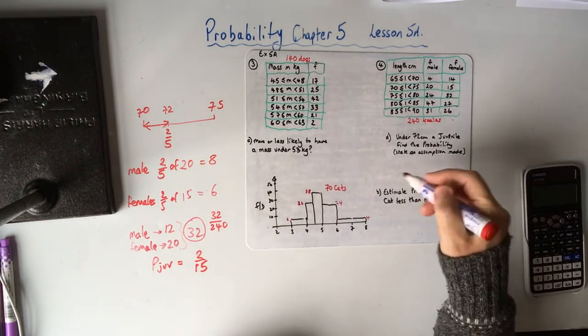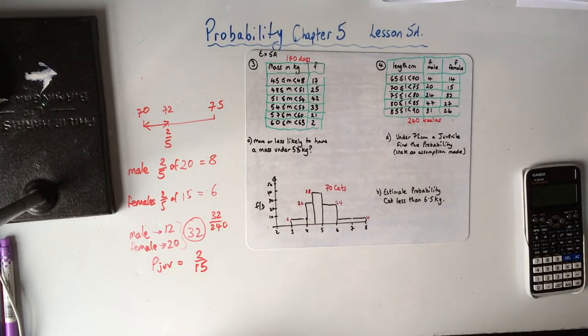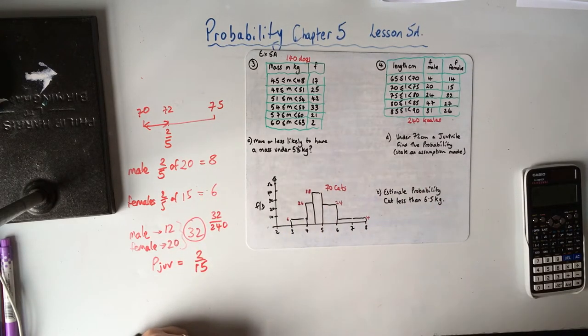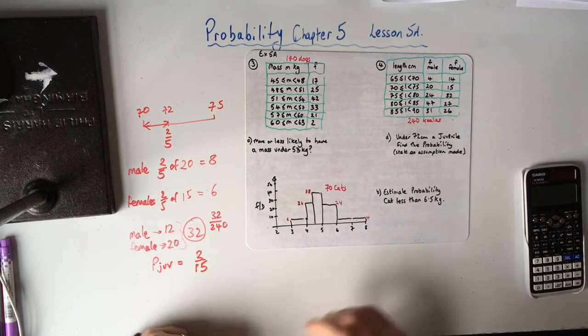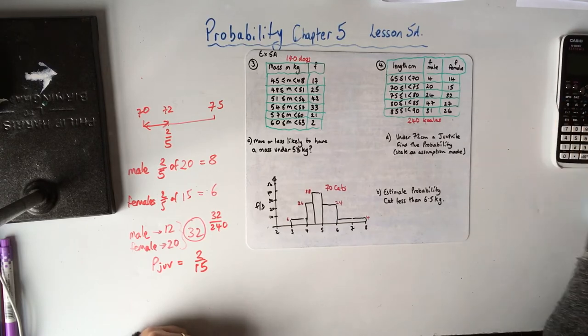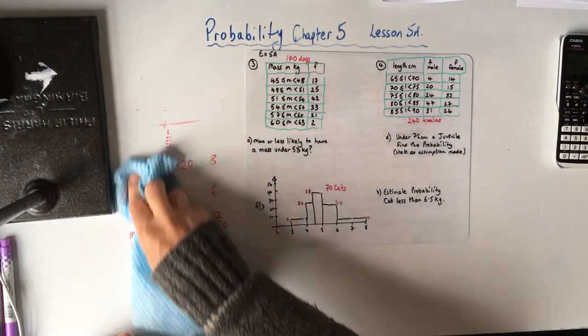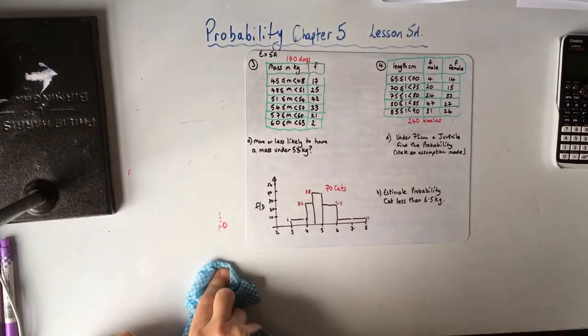And again it says state the assumption, and the assumption of course is that they're evenly spaced within the group. So that's those two, or the important bits of those two.